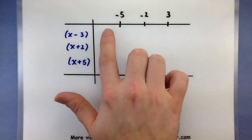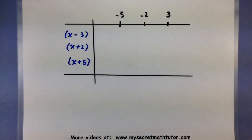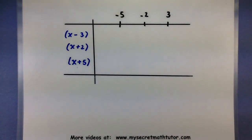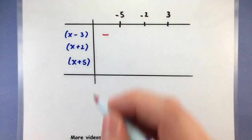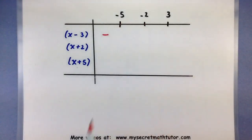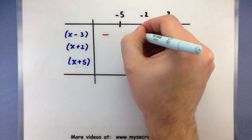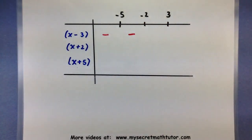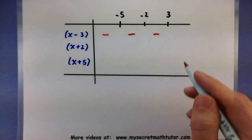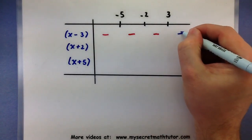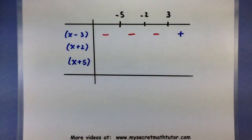Now we want to take values around these zeros and test them in the appropriate factor. Let's pick something less than negative 5, maybe negative 6. If I take negative 6 and plug it into x minus 3, I get negative 6 minus 3 — definitely negative. Something between negative 5 and negative 2, maybe negative 3: negative 3 minus 3 is still negative. Between negative 2 and 3, try 0: 0 minus 3 is negative. And something larger than 3, like 4: 4 minus 3 is positive.